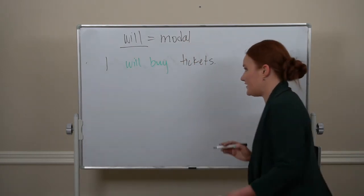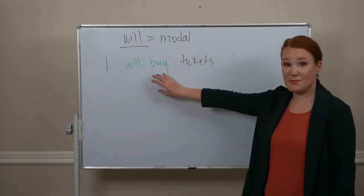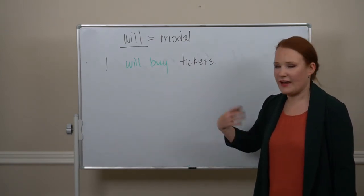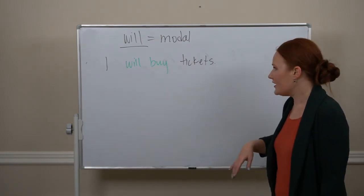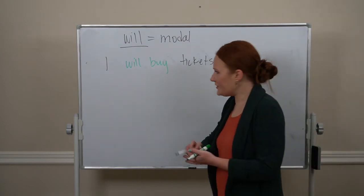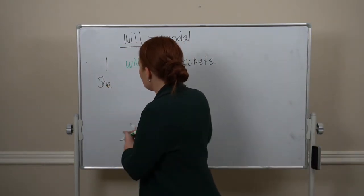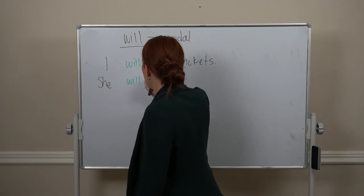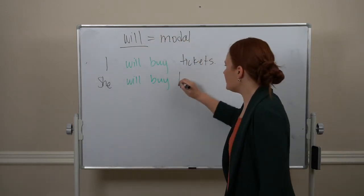Going back to our example: 'buy' is the base form of the verb. So it's 'I will buy' — not 'I will to buy,' not 'I will buying,' not 'I will buys.' And every subject is the same: 'She will buy tickets' — no -s endings on any form of 'will.'